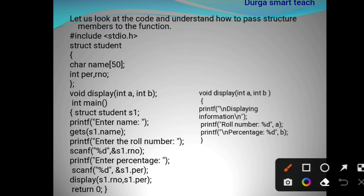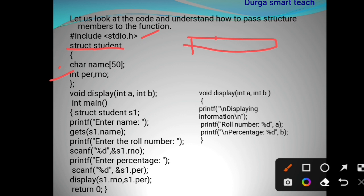Let's see an example of passing structure members to functions as arguments. We start with hash include stdio.h as the header file. Next, struct student — here struct is a keyword indicating a structure and student is the structure name. Inside this structure, I am declaring two variables: char and int. Char occupies two bytes and int occupies four bytes.